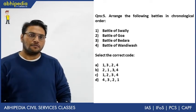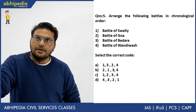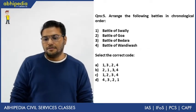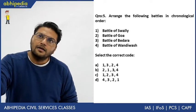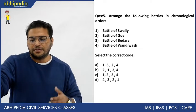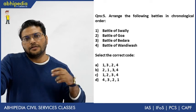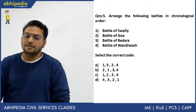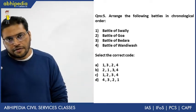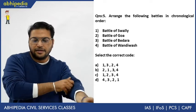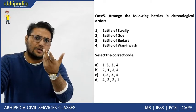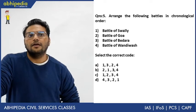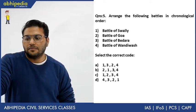Next question: arrange the following battles in chronological order — Battle of Swally, Battle of Goa, Battle of Bidara, Battle of Wandiwash. Battle of Swally (1612) was between English and Portuguese. Battle of Goa was between Portuguese and Dutch — Portuguese defeated the Dutch. Battle of Bidara was English versus Dutch — Dutch were defeated by the English. Battle of Wandiwash was between English and French during the Third Carnatic War.